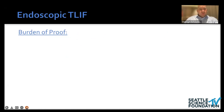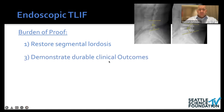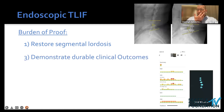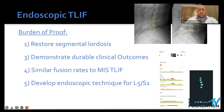The last slide — what's missing is the burden of proof. As a field we have to show that endoscopic surgery can restore segmental lordosis. A recent case at the University of Washington went from 14 degrees of lordosis to 21 degrees — so it's feasible. We have to demonstrate durable clinical outcomes; some studies are on the way, and we've started collecting outcomes through a consortium of 10 surgeons using a smartphone app called Spine Healthy. We also have to show fusion rates are similar to MIS T-LIF — the literature supports that — and we need to develop solutions for all-fives-A1, which is still difficult endoscopically.